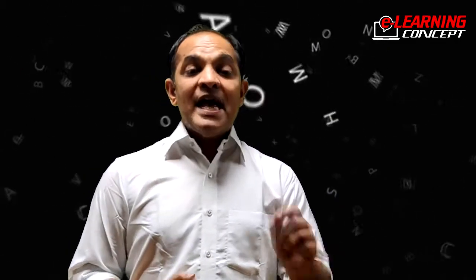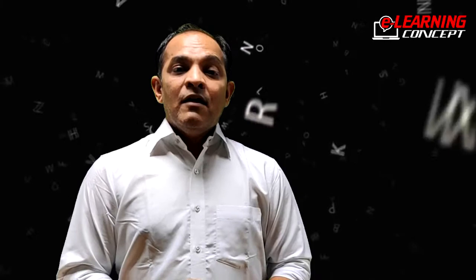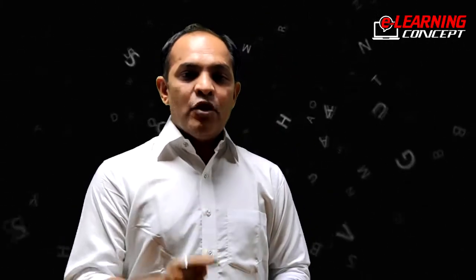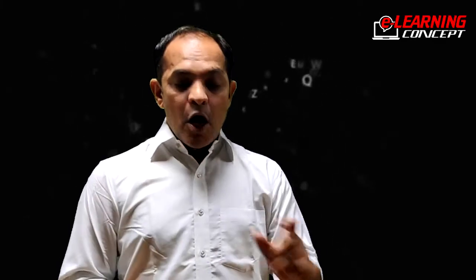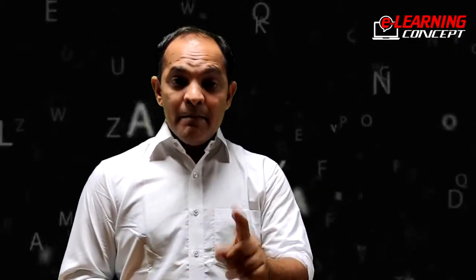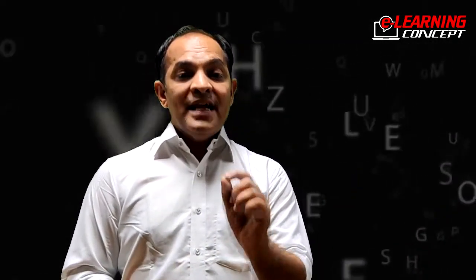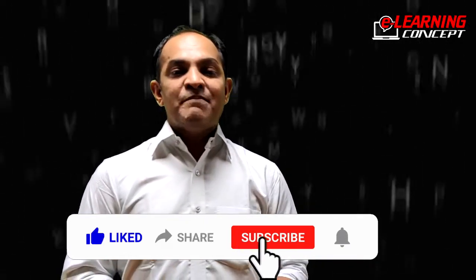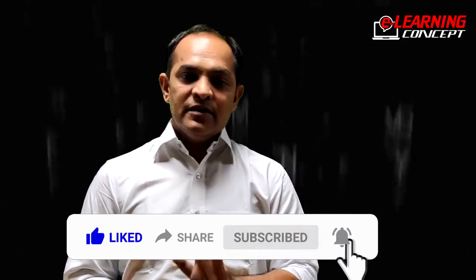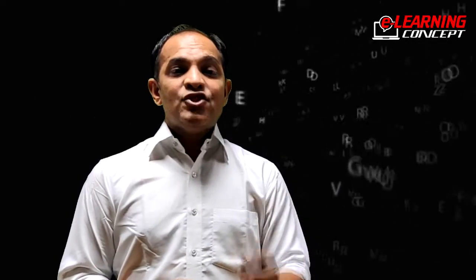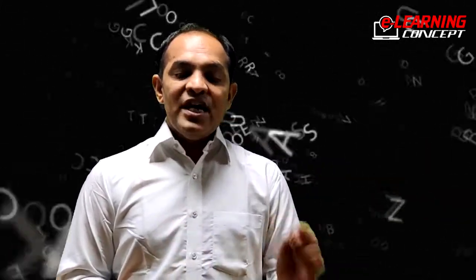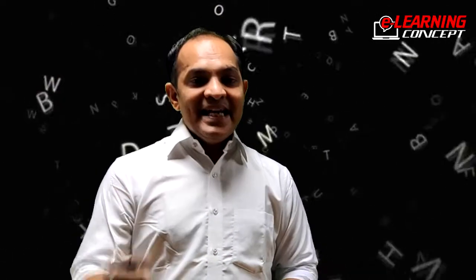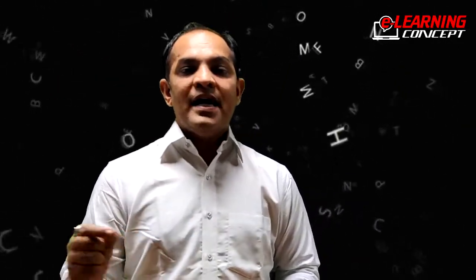For a negative sentence, the active voice formation is: subject plus have/has plus not plus past participle plus object plus other words. In passive voice, the object comes first: object plus have/has plus not plus been plus past participle plus by plus subject plus other words. Note that 'not' is placed between have/has and been. For example, 'She has not taught English subject' becomes 'English subject has not been taught by her.'